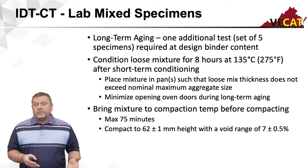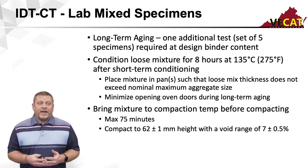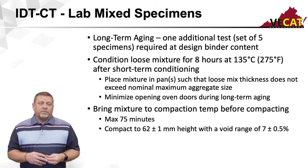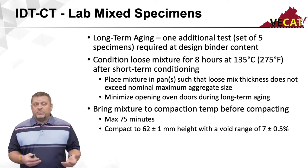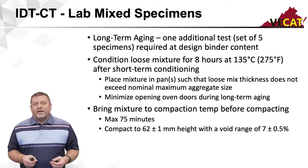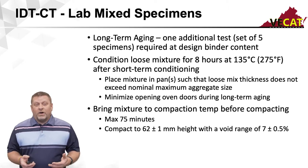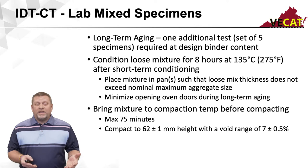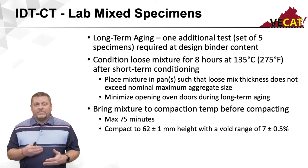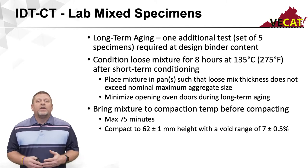Once the specimen has been long-term aged for eight hours, I need to bring it back up to compaction temperature prior to compacting, and I have a maximum of 75 minutes to accomplish this. Compacted pills are still 62 millimeters in height with an air void range of 7 plus or minus 0.5%. If your voids are out and you only made five pills, you don't have enough to report. So I highly recommend mixing and preparing seven specimens at a time for this test.